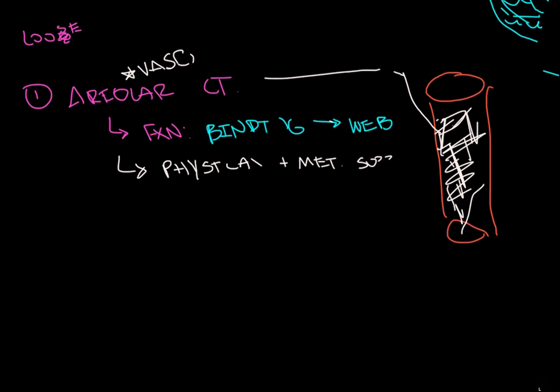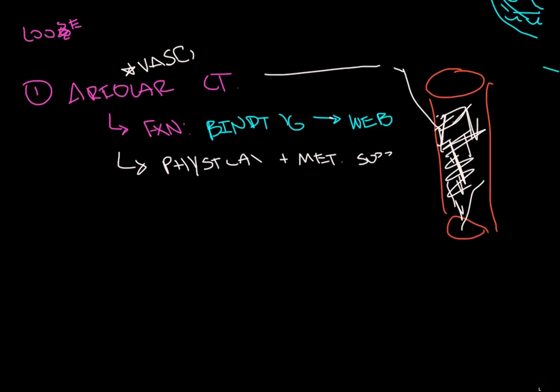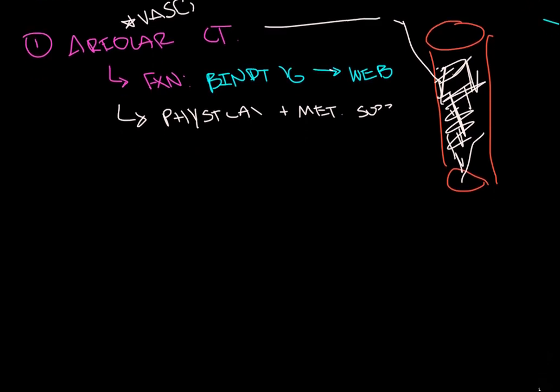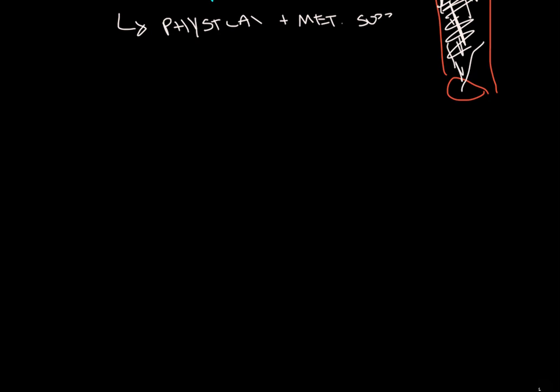So both physical plus metabolic support. And that is all you need to know about areolar. It has all three fiber types, elastic, collagen, and reticular, even though you can't really distinguish it. Next type is, here we go, adipose CT.